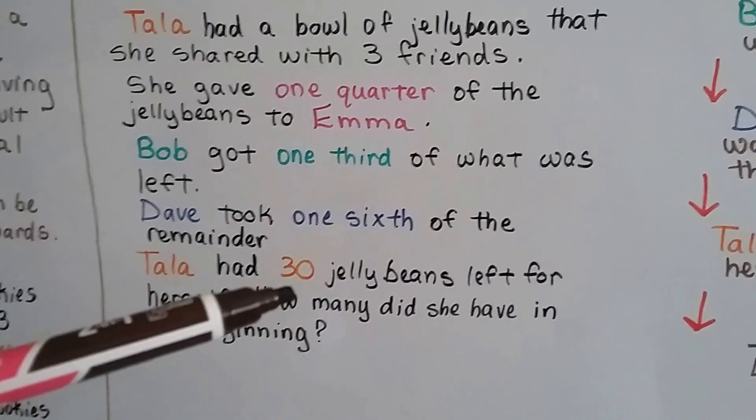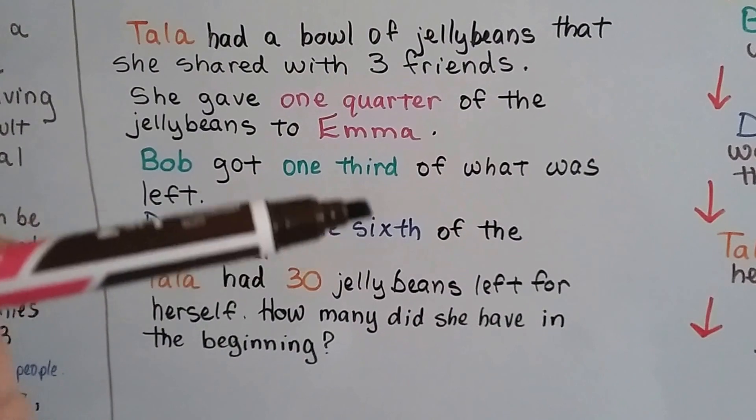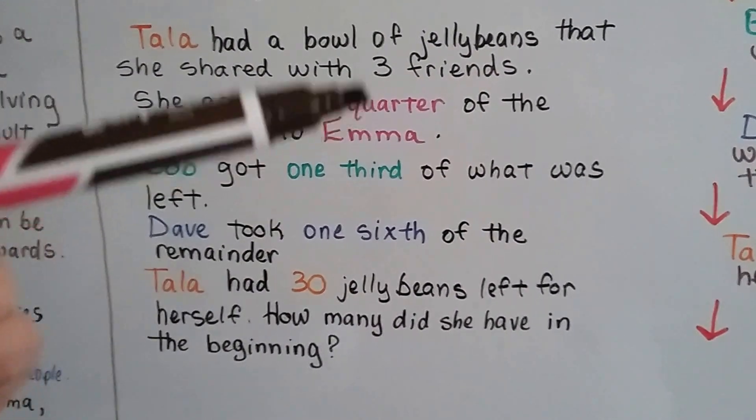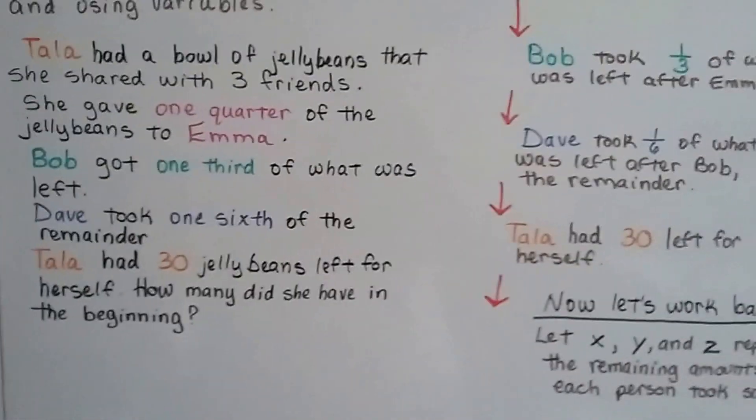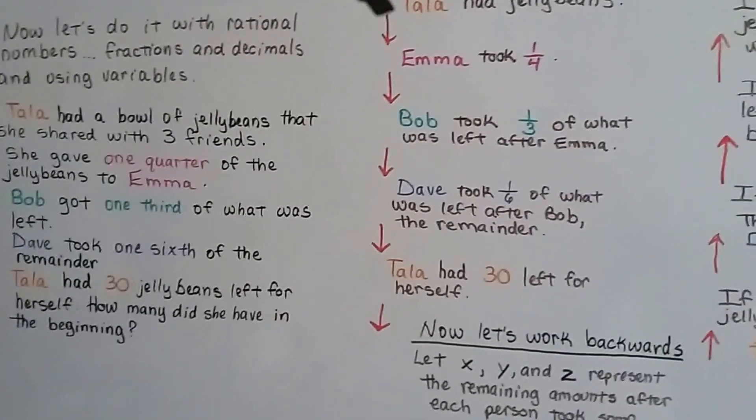What we're going to do is start at the bottom with the thirty, and we're going to add the one-sixth and then the one-third and then the one-quarter, and we're going to figure out how many she had in the beginning. So here's the data in the story.